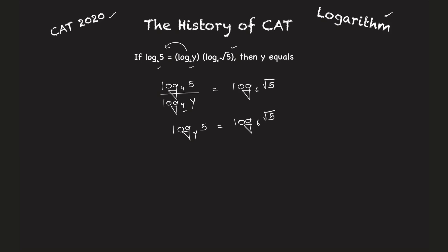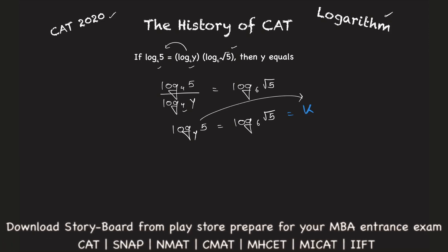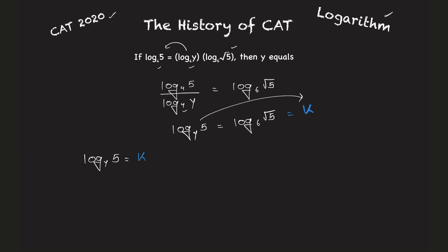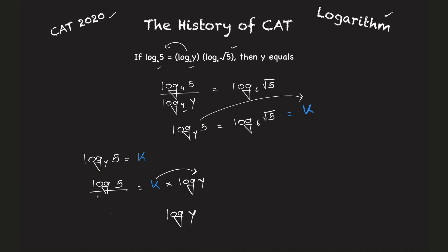Let this entire thing be equal to k — whatever the value of both sides, let it be k. Picking the first part: log to the base y of 5 equals k. Writing this as log 5 upon log y equals k, then k multiplied by log y gives log y to the power k, which equals log 5. Since both bases are e, we get 5 equals y raised to k.